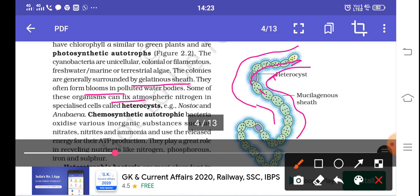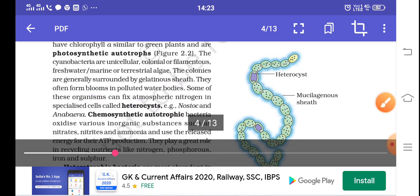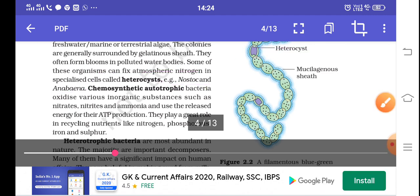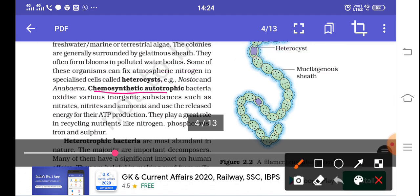They have a special feature that they can fix atmospheric nitrogen. In such conditions in the colonies, they are able to fix atmospheric nitrogen through specialized cells called heterocysts, which is a very special feature about them. For example, Nostoc and Anabaena. We are also seeing a diagram here.